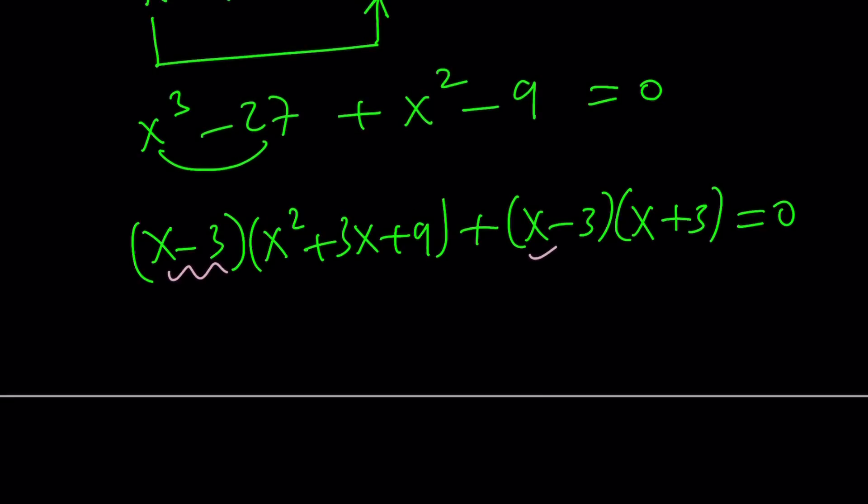And then we get x squared plus 3x plus x, which is 4x, plus 9 plus 3, which is plus 12, equals 0.